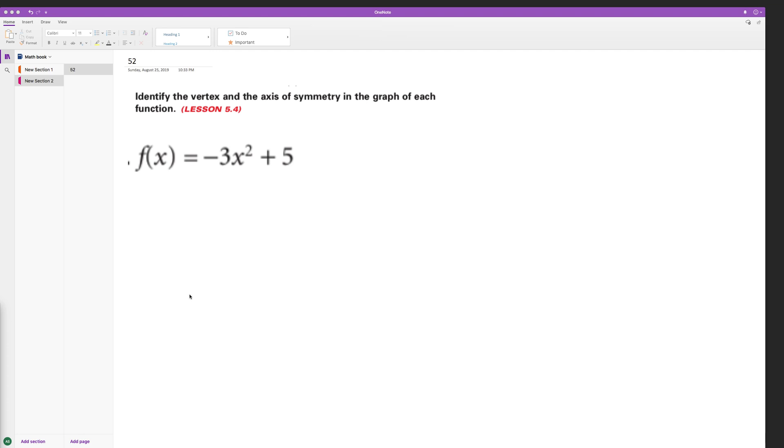So here what we want to do is figure out what the axis of symmetry is and the vertex. So to find the axis of symmetry, all we have to do is use the equation negative b over 2a.